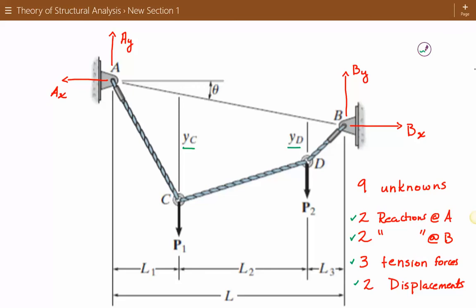If we have nine unknowns and we need to solve for them, we would need nine equations. We can easily get the first eight equations by doing two equations of force equilibrium at point A, at point B, at point C, and at point D. So four locations times two equations of equilibrium at those four locations equals eight equations.